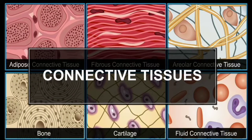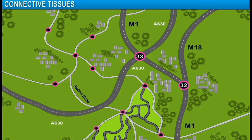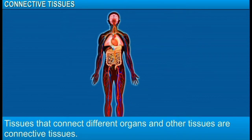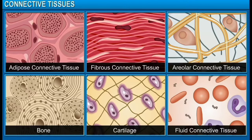In this module, you will learn about connective tissues. This is a network of roads that connects different places to each other. Similarly, the animal body also has its own network of tissues that connects different organs and tissues — it is the connective tissue. Connective tissues are of different types depending on their shape and functions. Let's take a detailed look at each of them.